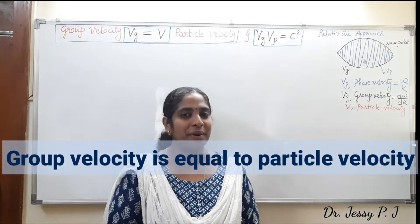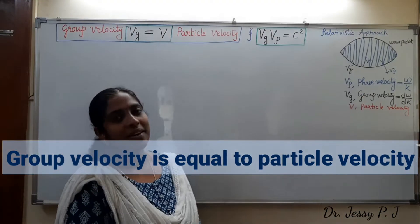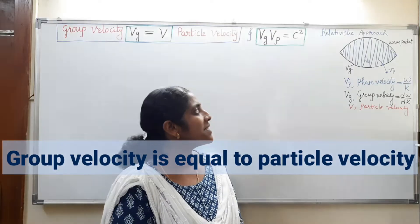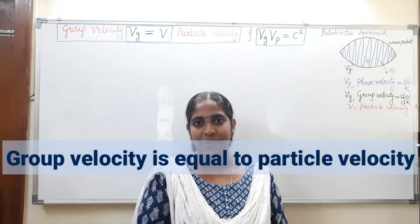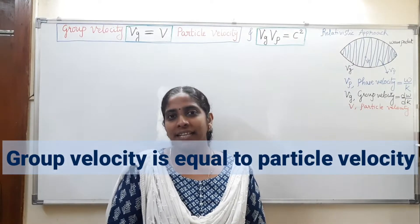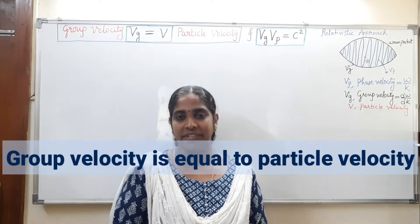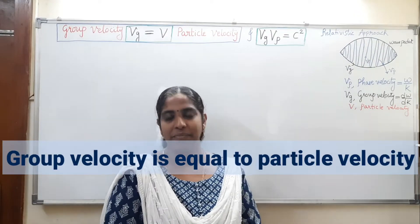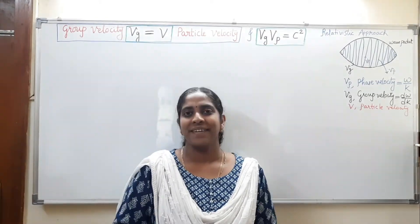In one of the previous videos in quantum mechanics, we studied this relationship where group velocity equals particle velocity, and also group velocity times phase velocity equals c squared, where c is the speed of light. But in that video we did not consider the relativistic effect. In this video we are going to see the same relationship by considering the relativistic effect as well.